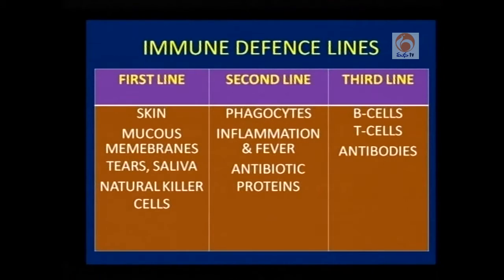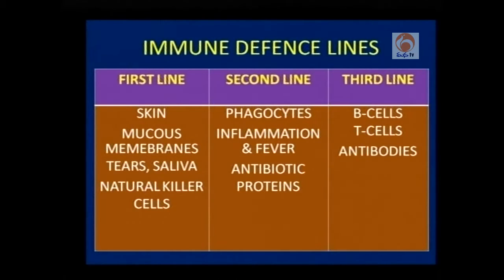If there is a failure at this level also, then the third line comes into picture. The third line has B cells and T cells as the key players. One assumption is that all three defense lines function simultaneously at one time. Just for the sake of understanding, we separate the three defense lines and think of them independently.